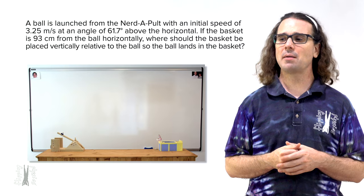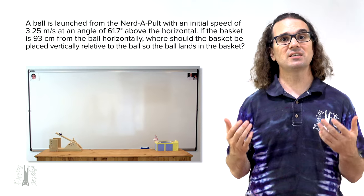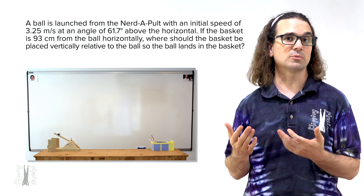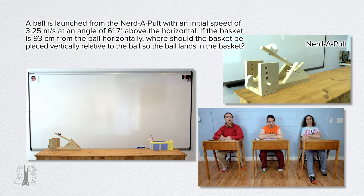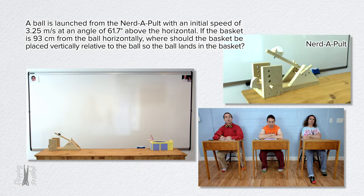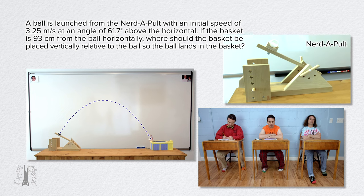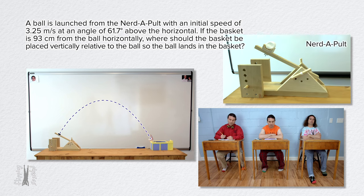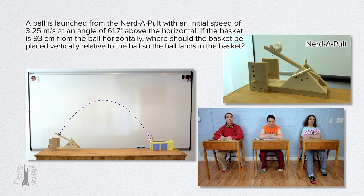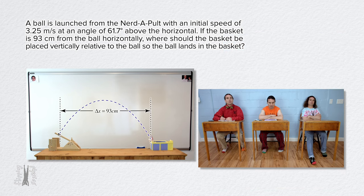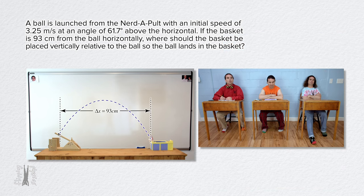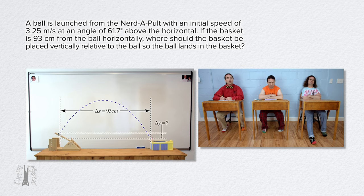Bobby, please read the problem and Bo, please tell me everything we know in terms of unit vectors. A ball is launched from the Nerdipult with an initial speed of 3.25 meters per second at an angle of 61.7 degrees above the horizontal. If the basket is 93 centimeters from the ball horizontally, where should the basket be placed vertically relative to the ball so the ball lands in the basket?